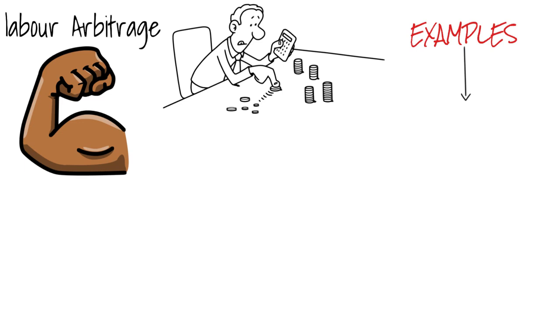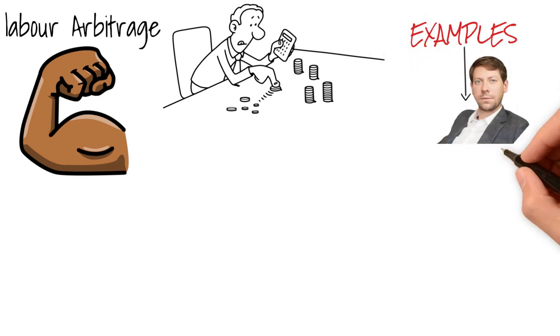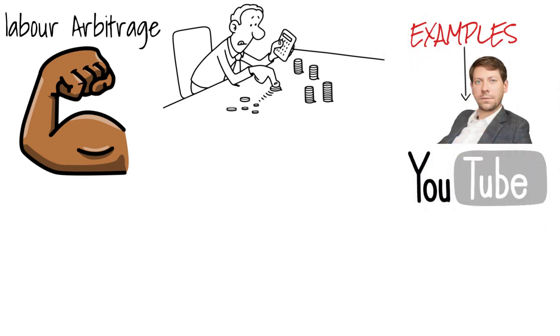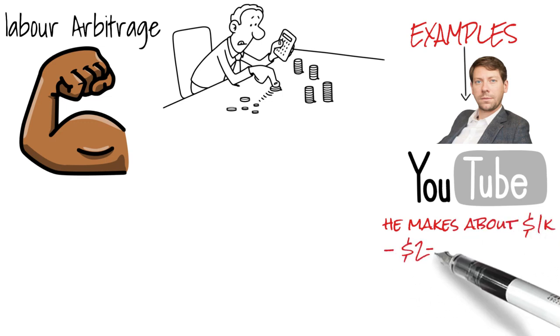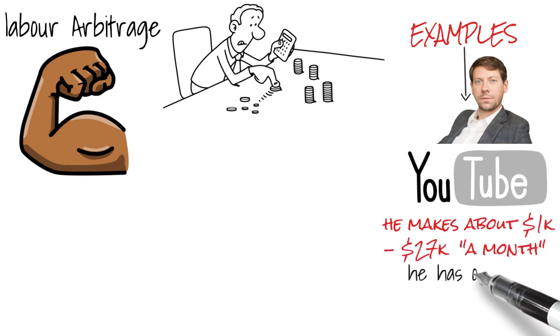Let's look at some examples. Orion Taraban is a YouTuber. From Social Blade, it appears that he makes anywhere from $1,000 to $27,000 a month. He's standing at over 500,000 subscribers.